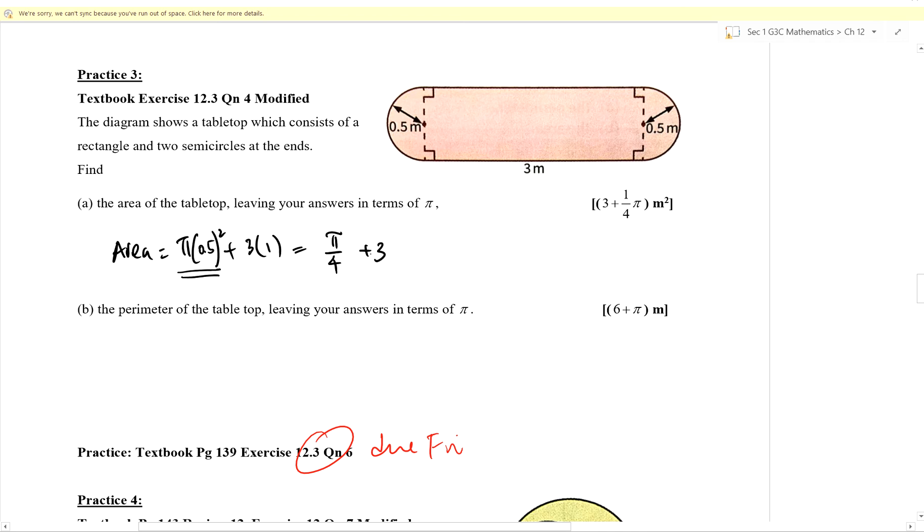Now this is in terms of π already. When they tell you to leave it in terms of π, it means you have less work. It doesn't make things more complicated. It makes things easier for you. And there's another benefit. This value over here is precise, it's very accurate. There is no rounding off involved. So if you ever need to follow up with the next part of the question requiring the answer in part A, would you use this or would you use whatever I calculated earlier on from the calculator? We would want to use this. This is the most exact.